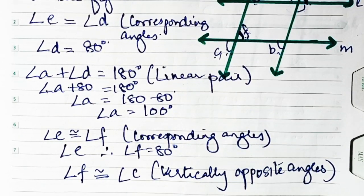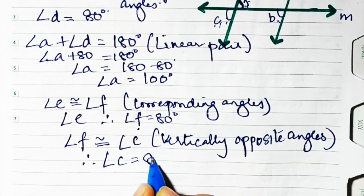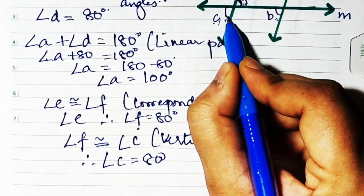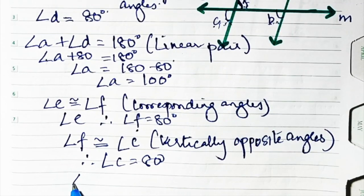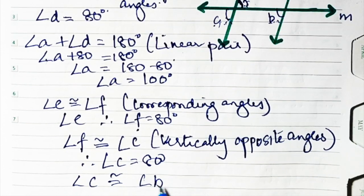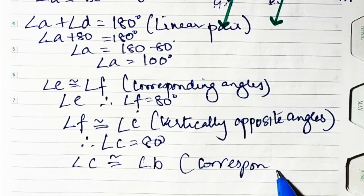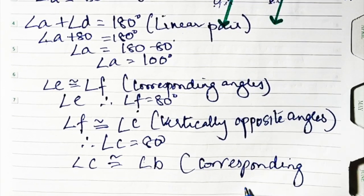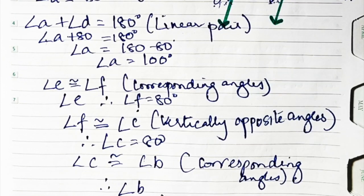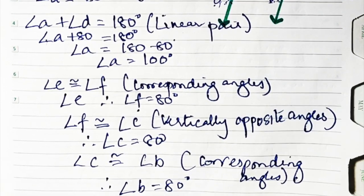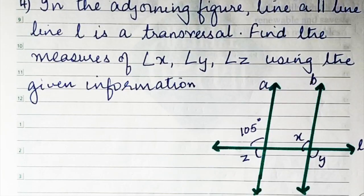Therefore f is 80°, so angle c is also 80°. Since c is 80°, b will also be 80° because c and b are corresponding angles. Therefore angle b is also 80°. So the final answers are: a = 100°, b = 80°, and c = 80°.